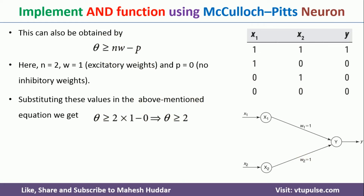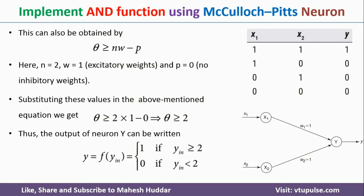So the final activation function is: y = f(yin) = 1 if yin is greater than or equal to 2 (threshold = 2), and 0 in all other cases. For the AND function implementation using the MP Neuron, w1 = 1, w2 = 1, and theta = 2.